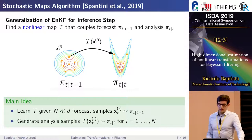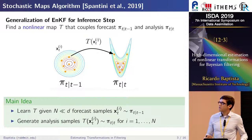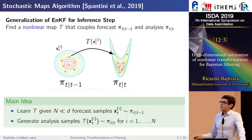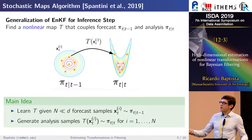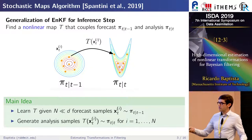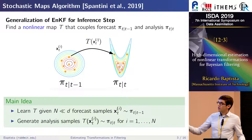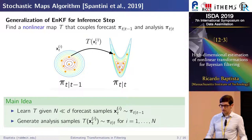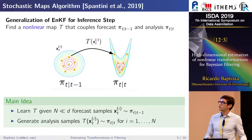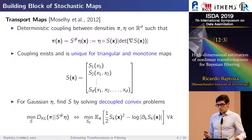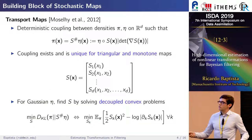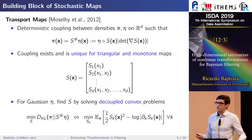This follows the stochastic map algorithm that Alessio introduced yesterday, which we'll briefly review. One thing that makes this problem challenging is that we only have prior or forecast ensembles and need to derive these high-dimensional nonlinear maps with very few samples.